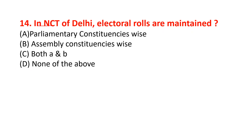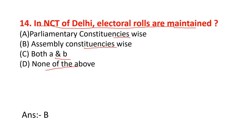In NCT of Delhi, electoral rules are maintained — options are parliamentary constituencies wise, assembly constituencies wise, both A and B, or none of the above. The correct option is option B — assembly constituencies wise.